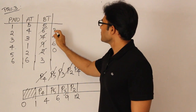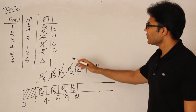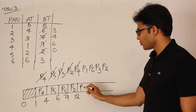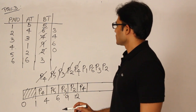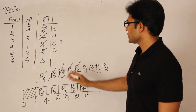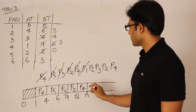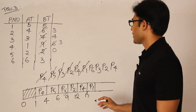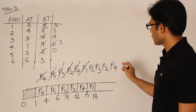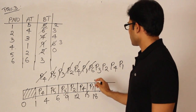P2 runs for 3 units — its remaining time is now 3 — so we add P2 back to the queue. Next is P4. P4 requires 6 units remaining, so we run it for 3 units until time 15, leaving 3 more units, and put P4 back. Then P1 is scheduled — P1 needs 5 units but we run only 3, leaving 2 units remaining, so P1 goes back to the end of the queue.